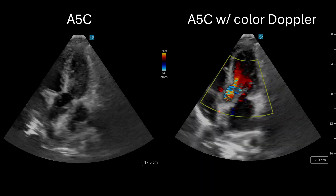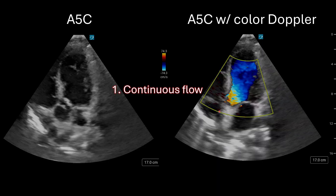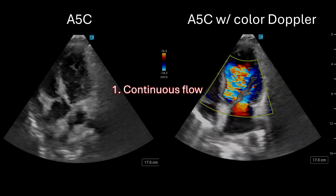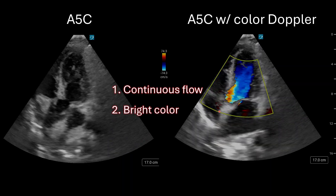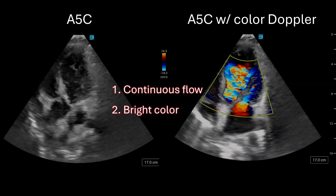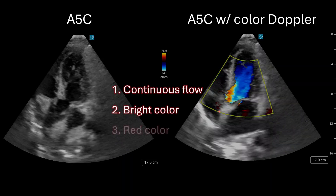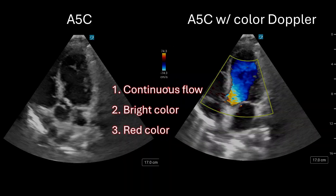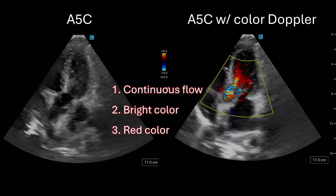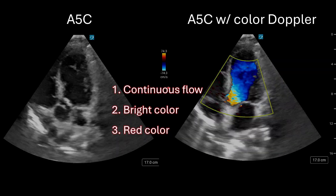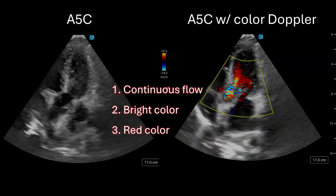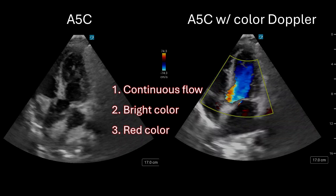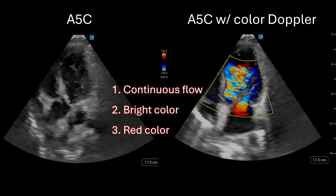On the color Doppler, there's a large regurgitation jet. How do I know this is regurgitation? Three reasons. First, I see continuous flow in the LVOT — there should be no flow in the LVOT in diastole. Second, the jet is bright, meaning fast and usually turbulent blood flow. Third, the jet is red. Based on the color scale, a red signal is blood moving towards the probe, but blood flow should be going away from the probe in the LVOT and appear blue. So this is acute severe aortic regurgitation due to endocarditis causing a flail leaflet of the aortic valve.